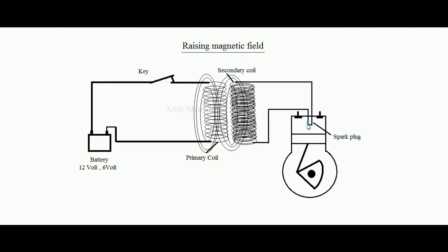Only one pulse of spark develops between the electrodes for a very small amount of time. Since one spark is only needed for combustion, this is sufficient — our purpose is solved. When key K is pressed, one spark is developed, and it is enough to burn the fuel.